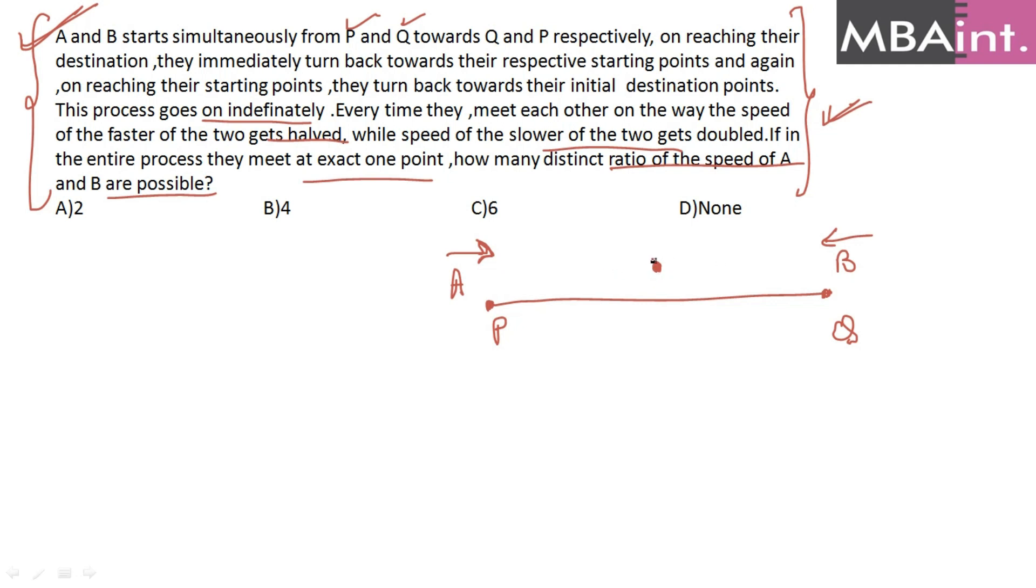What happens is whenever they are meeting, the speeds get exchanged. The faster one's speed gets halved and the slower one's speed gets doubled. So let's say A goes to the other way here and B goes the other way. If this one's speed is more, then on reaching the destination his speed becomes less and this one's speed becomes more again. When they meet again, they are meeting at the same point.